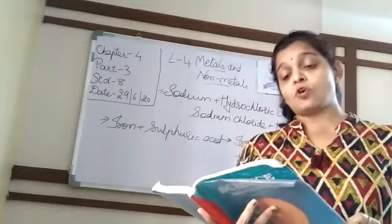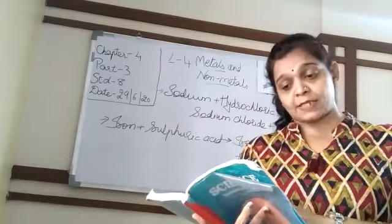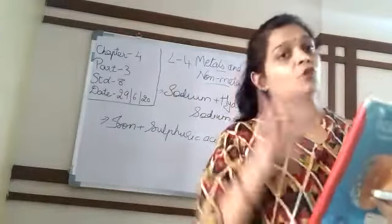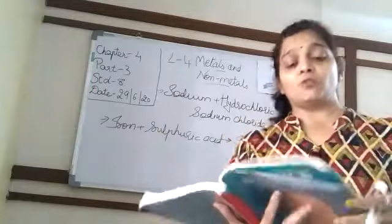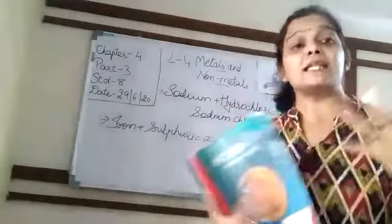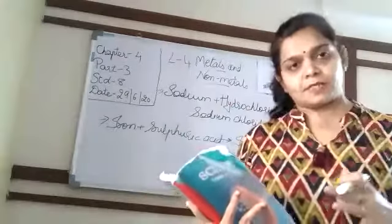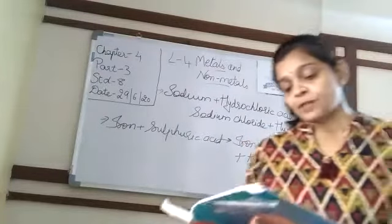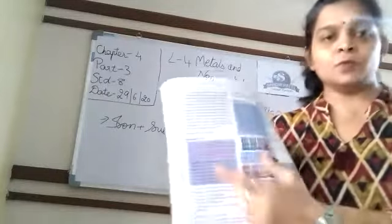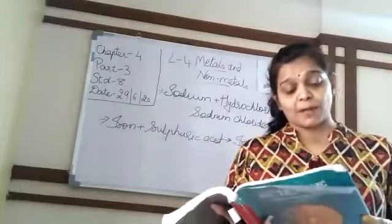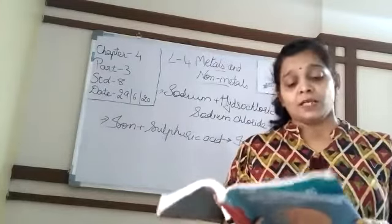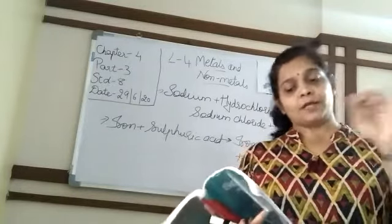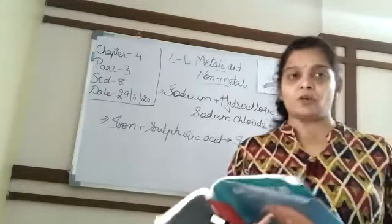Now, reaction with base — Activity 4.7. I will read this blue box. Prepare a fresh solution of sodium hydroxide in a test tube by dissolving 3-4 pellets of it in 5 ml of water. Sodium hydroxide is a base, as you all know children.